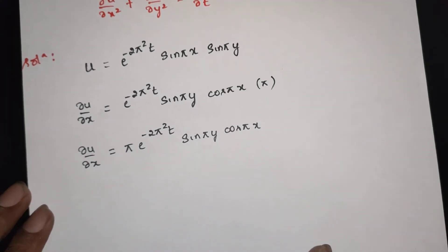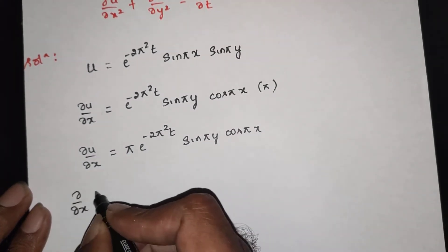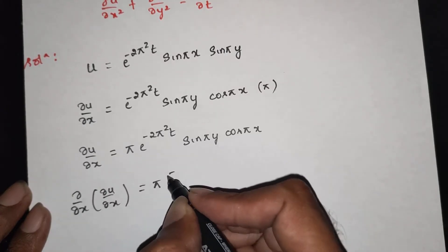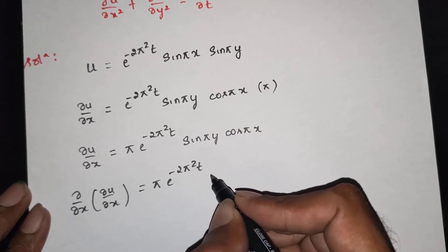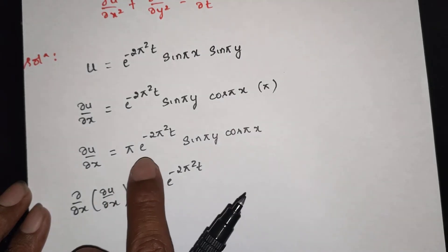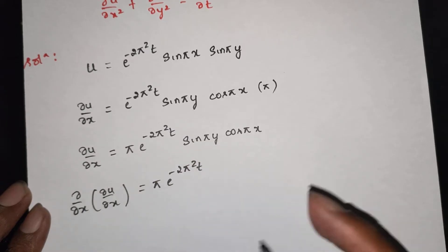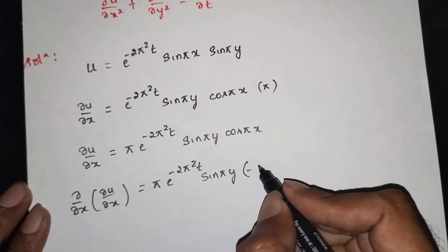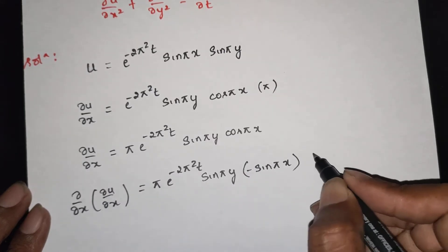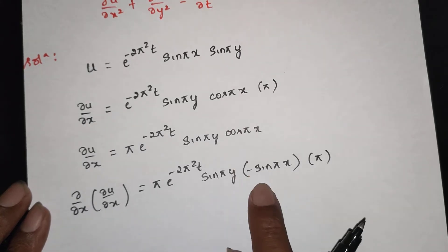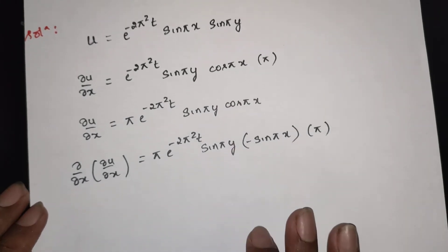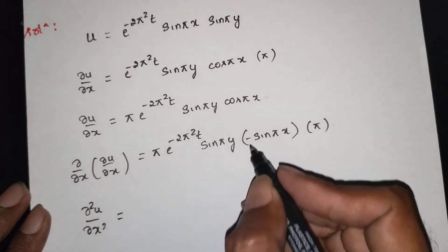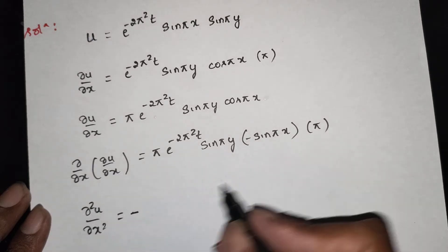Now differentiating dou u by dou x again with respect to x. The t function and y function are constant. sin(pi y) is constant, cos(pi x) differentiates to minus sin(pi x) into pi. Therefore dou squared u by dou x squared is equal to plus into minus, giving minus pi squared e power minus 2pi squared t sin(pi y) sin(pi x).